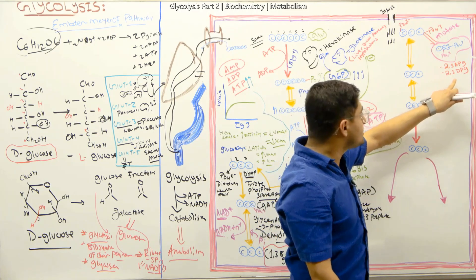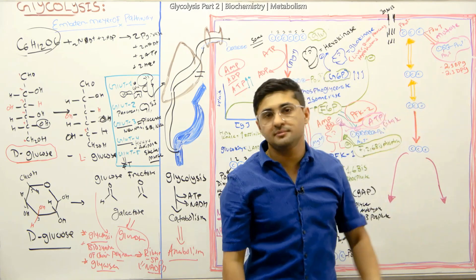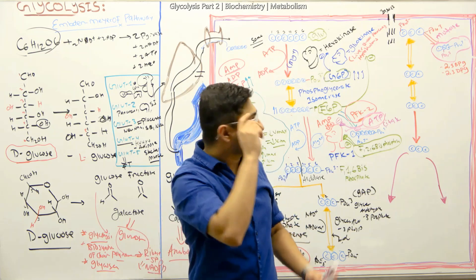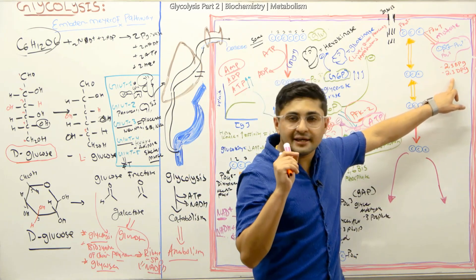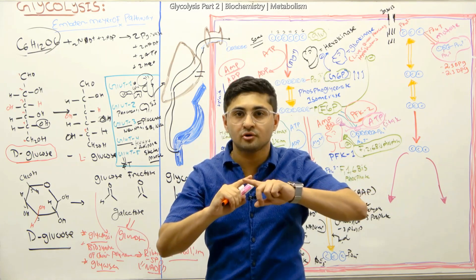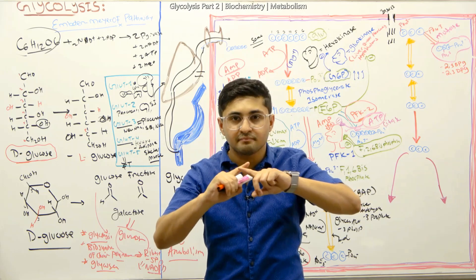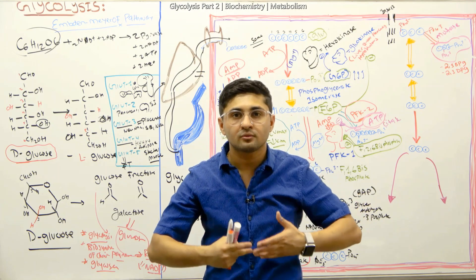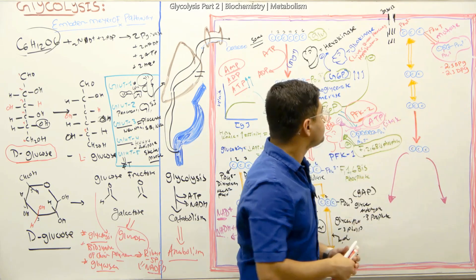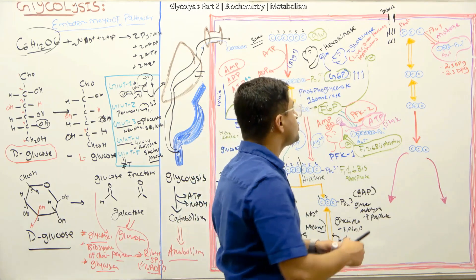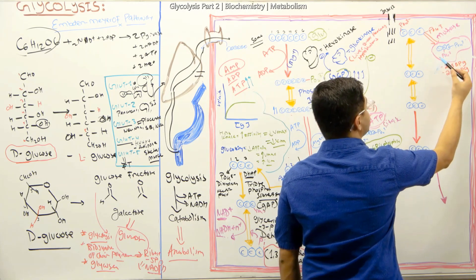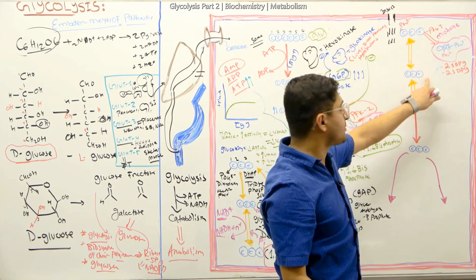2,3-DPG is very important. The reason why it is important is because 2,3-DPG has a higher affinity to bind to hemoglobin for oxygens. What that means is that they can do a cross-link of the beta chains of hemoglobin. When they do a cross-link of the beta chains of hemoglobin, oxygen will be released out and go to the peripheral tissue. That's how 2,3-DPG plays a role. This 2,3-DPG can also be broken down by a phosphatase enzyme.